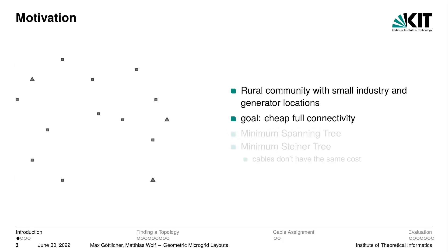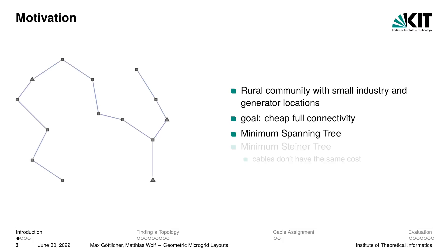As a motivation, imagine a rural community with no electric network, with small industry and houses and possible generator locations such as places where a hydroelectric plant can be installed or wind turbines can be placed. The triangles represent these generator locations. What we want to achieve is a network that connects all the terminals as cheaply as possible, and the obvious way which comes to mind is using a minimum spanning tree.